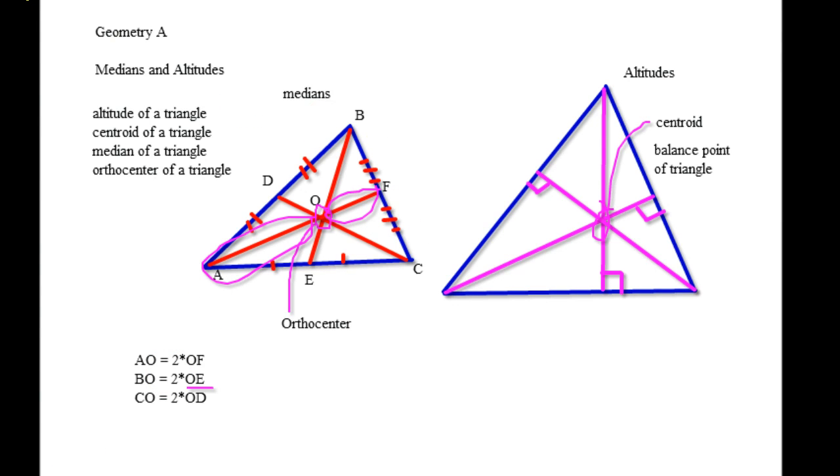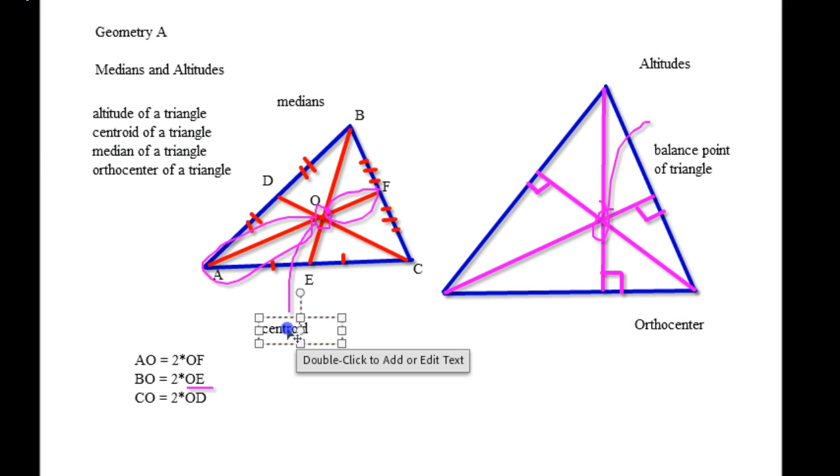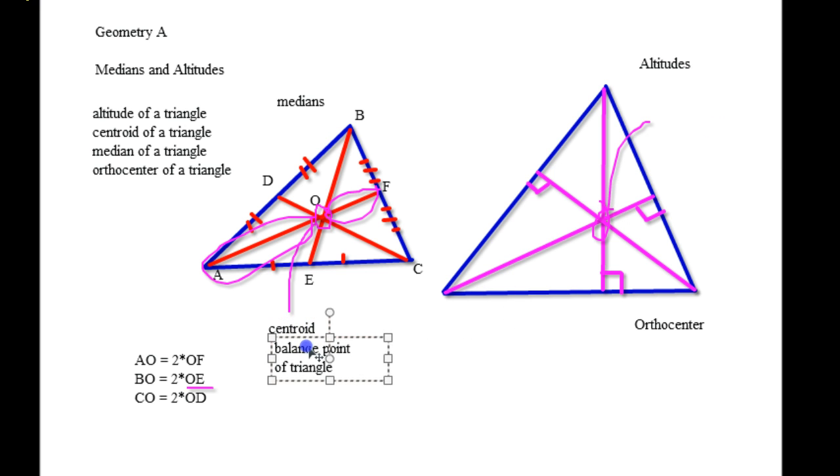And you know what I just realized? I just realized that I mixed up the names, and this is why I always get them screwed up. Altitudes, whoops, shoot. Medians have centroids as the balance point of it, and orthocenters are the center points of altitudes.